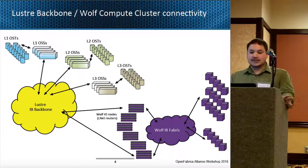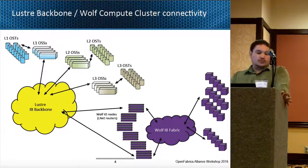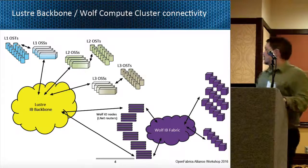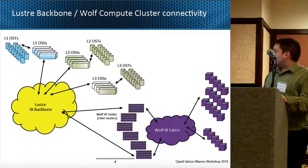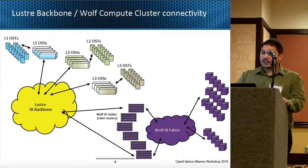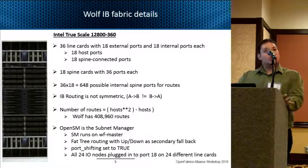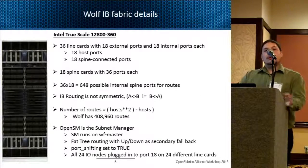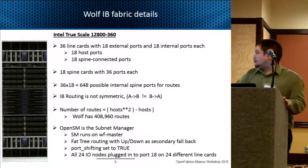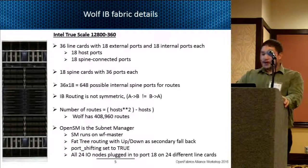A little bit of information about the Wolf cluster itself: it is an Intel TrueScale chassis internal fabric running at QDR. We have 18 spine cards within that fabric with 36 ports each, and then about 640 possible internal spine ports for the routers on that fabric with the 36 line cards on that chassis. IB routing is not symmetric on the fabric, so we have over 408,000 possible routes throughout the whole Wolf fabric. We're running OpenSM as the subnet manager on the master node for the fabric, running a fat tree algorithm with up-down as its secondary.